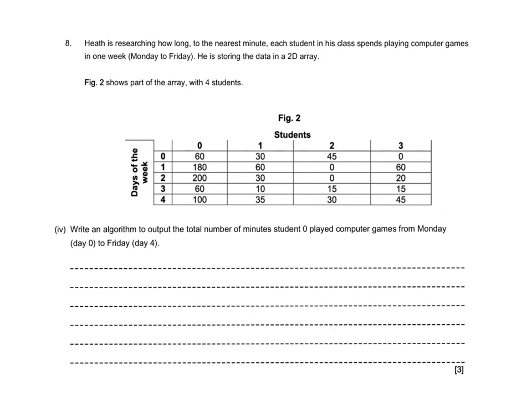Now we could do this in a kind of traditional way, something along the lines of hours played 0, 0, plus hours played 0, 1, and 2, and 3, and 4, and so on, and then outputting the result. So that would get us some marks, but not full marks.